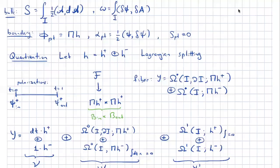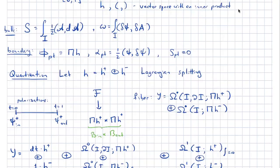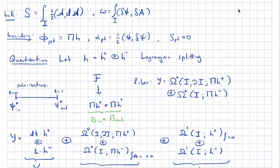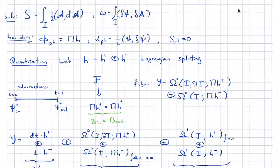The Lagrangian splitting can be over real or complex numbers. This induces a splitting of the fields into plus part and minus part. At the initial time I fix the plus component of fields, and at the final time I also fix the plus component of fields. This is the base of my fibration of fields over boundary conditions. The universal fiber is the differential forms on the interval relative to the boundary — relative to both boundary endpoints.